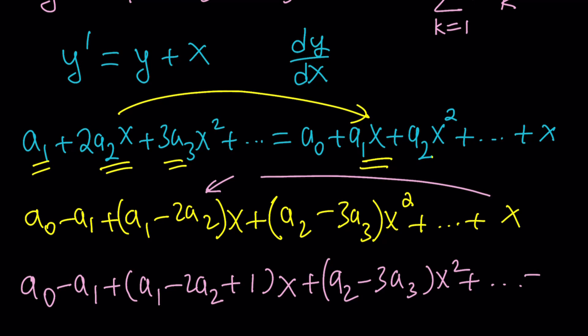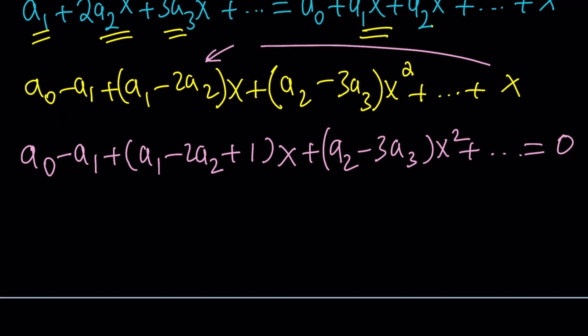This is the key step. For this infinite polynomial to equal zero, every coefficient must be zero — the constant, and each power of x. So each bracketed expression is set equal to zero, giving us a system of equations. We do not know a sub 0 — and we won't unless given initial conditions, which we aren't. These are undetermined coefficients.